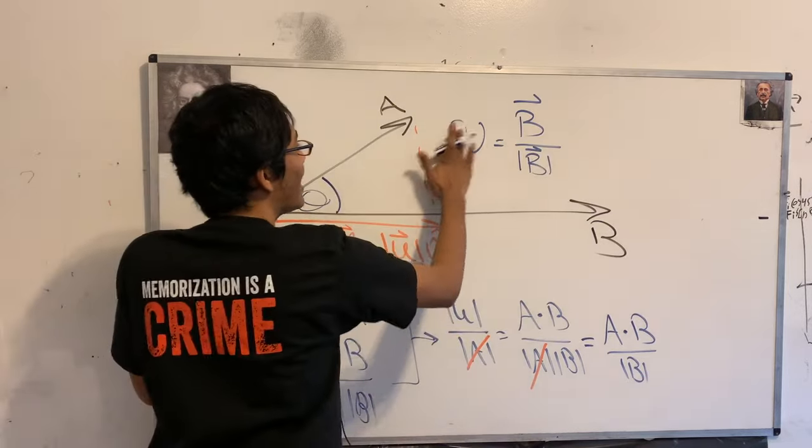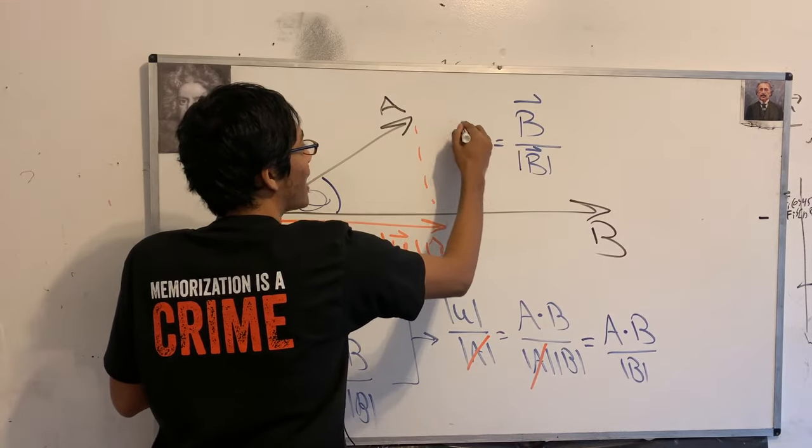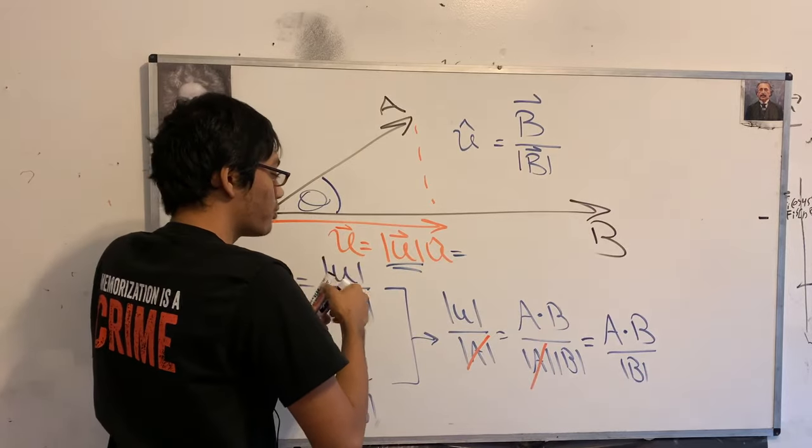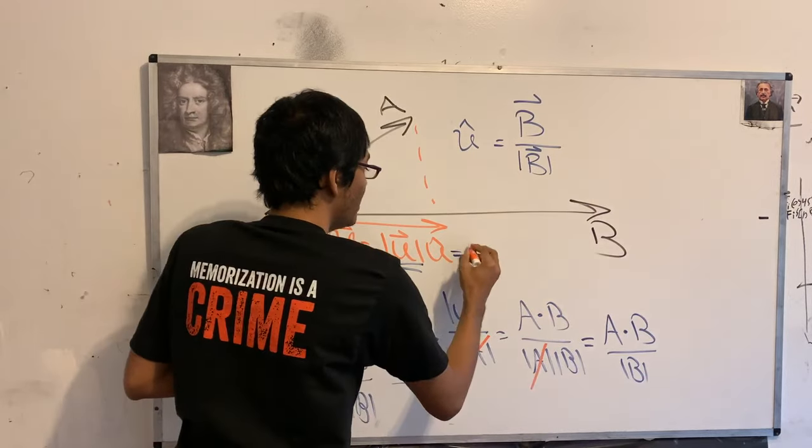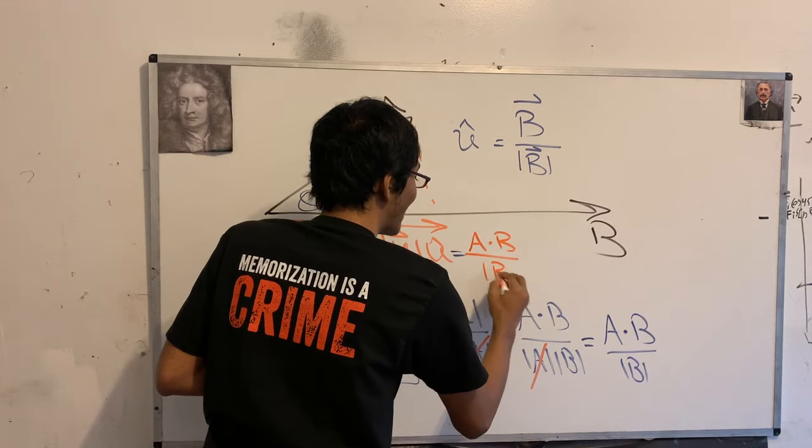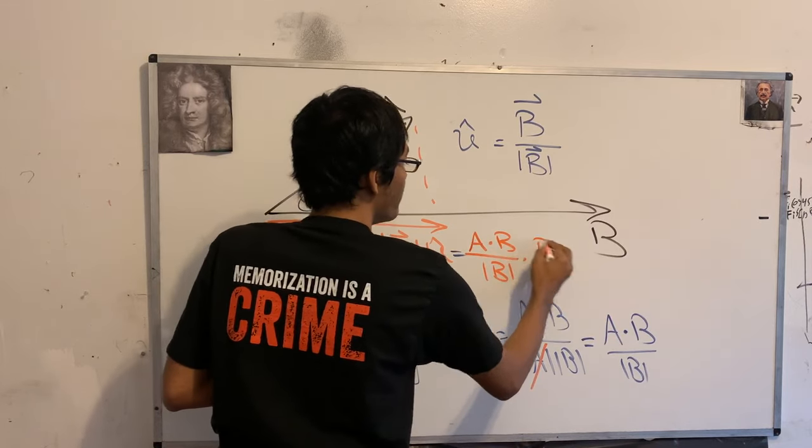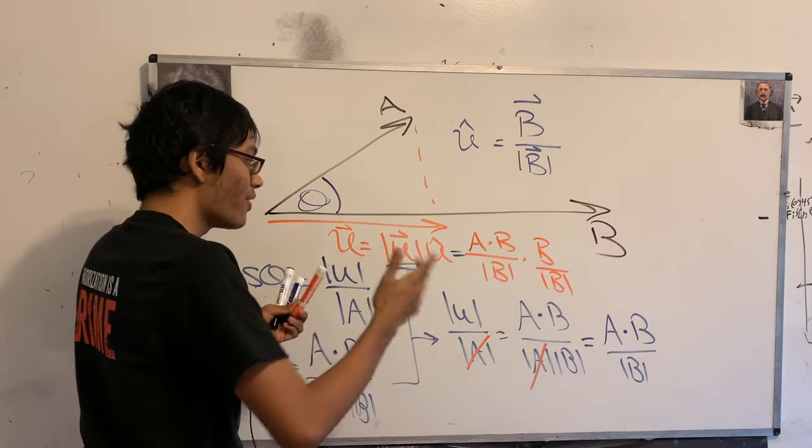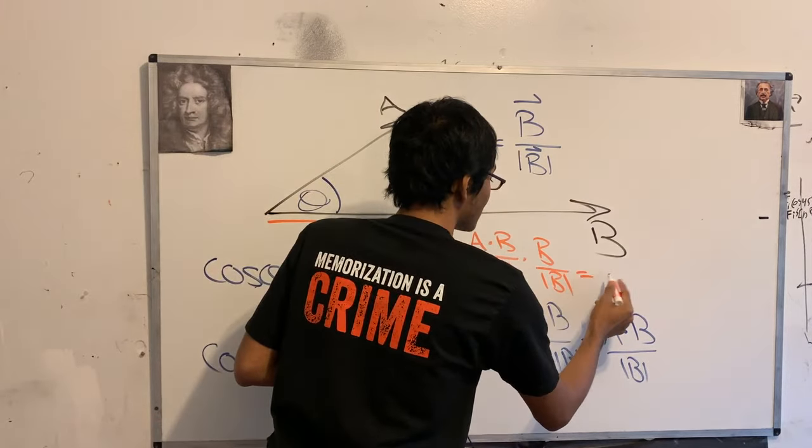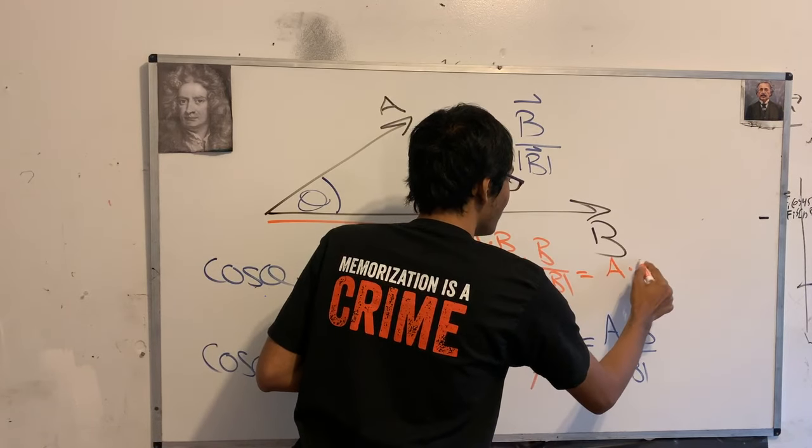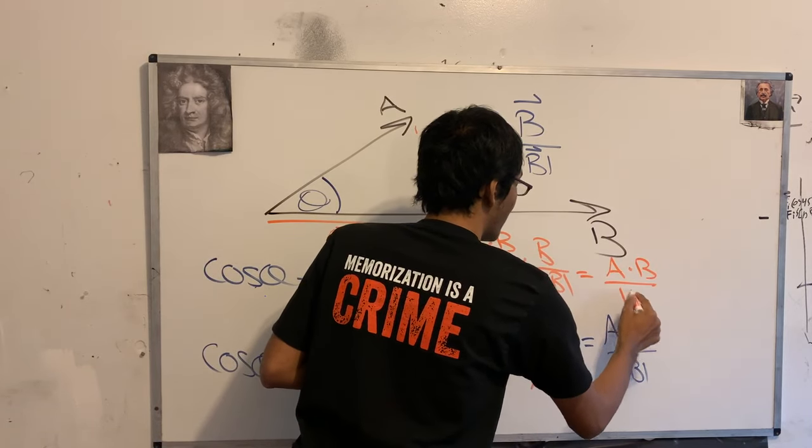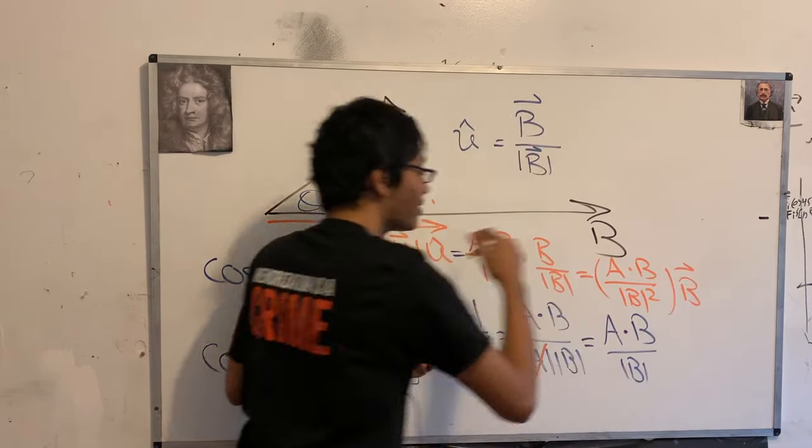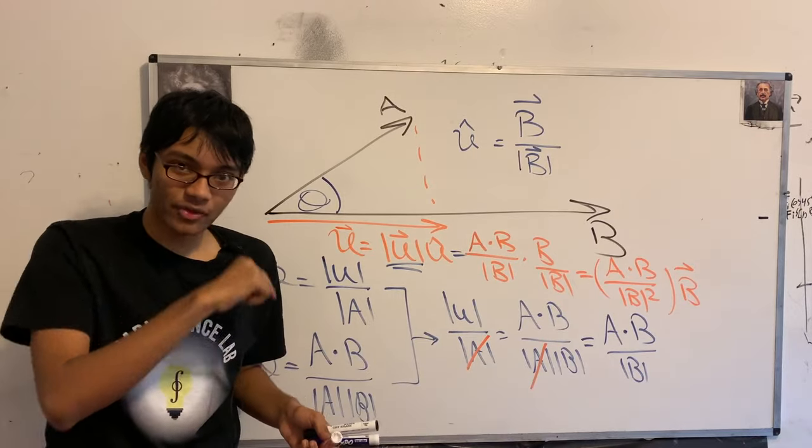And so now, if we go ahead and multiply these two guys together, the direction and the magnitude, we're going to get our final projection. So that's going to be A dot B over the magnitude of B times B over the magnitude of B, ladies and gentlemen. And we're almost there. So what is this going to simplify to? Well, we're going to have A dot B on the top divided by the magnitude of B squared all times B. And that right there, ladies and gentlemen, is the projection formula. Thanks for watching, and we'll check you out in the next episode of Vector Calculus.